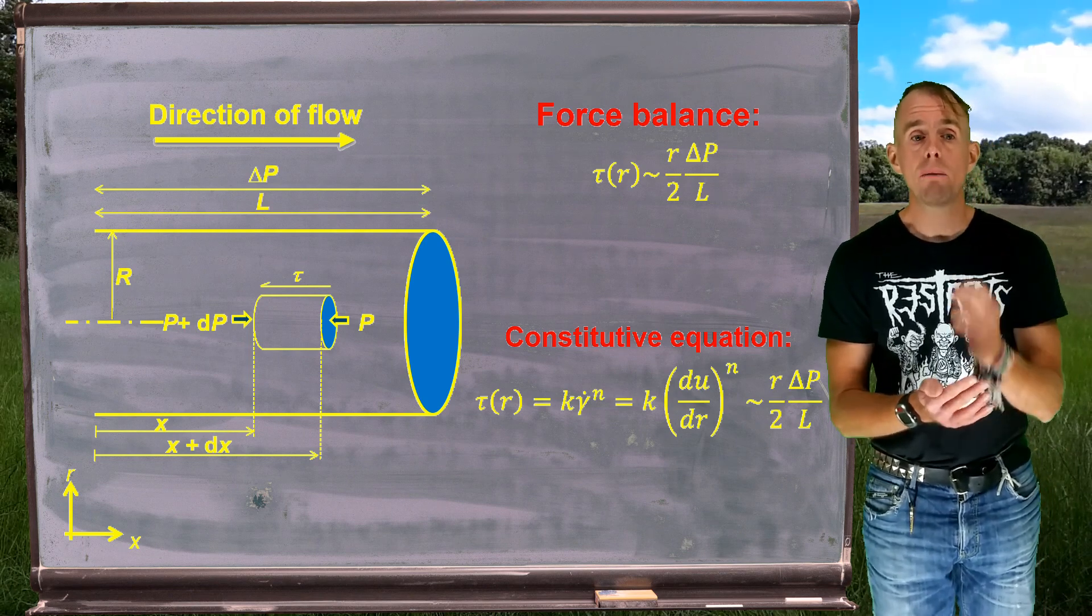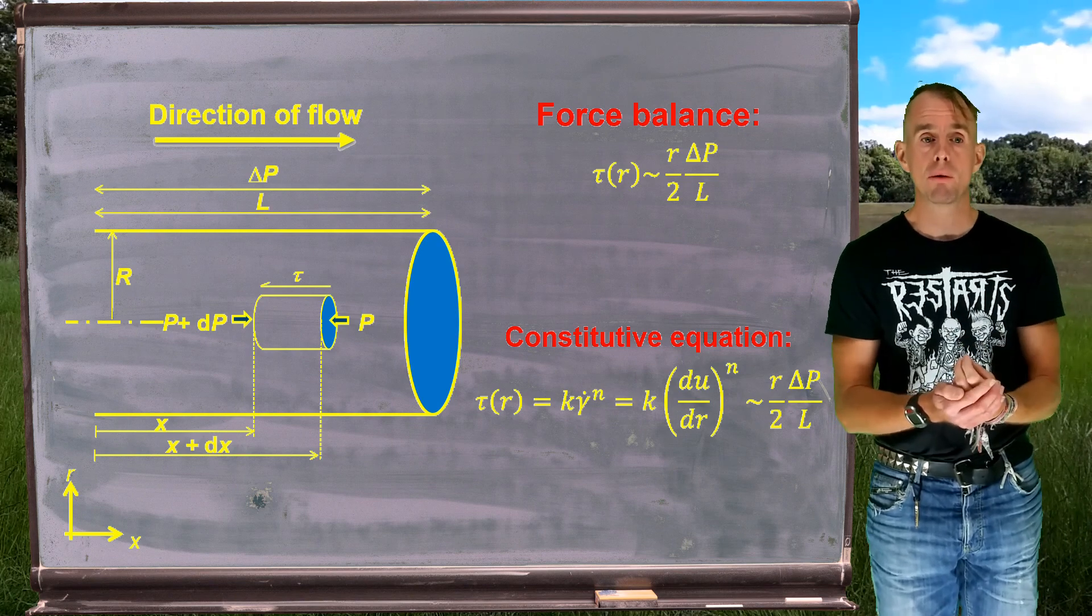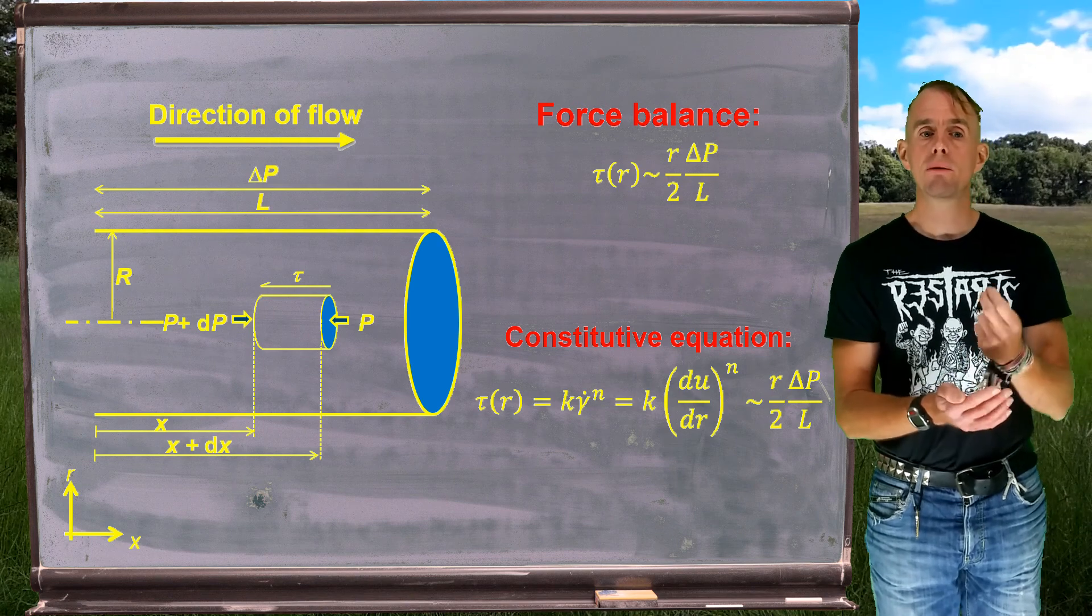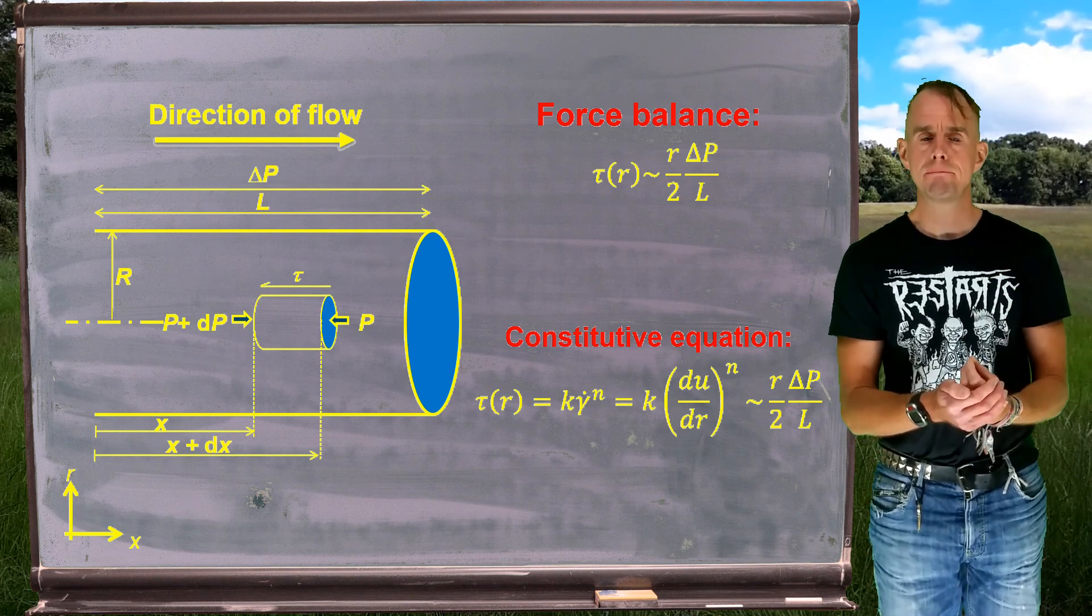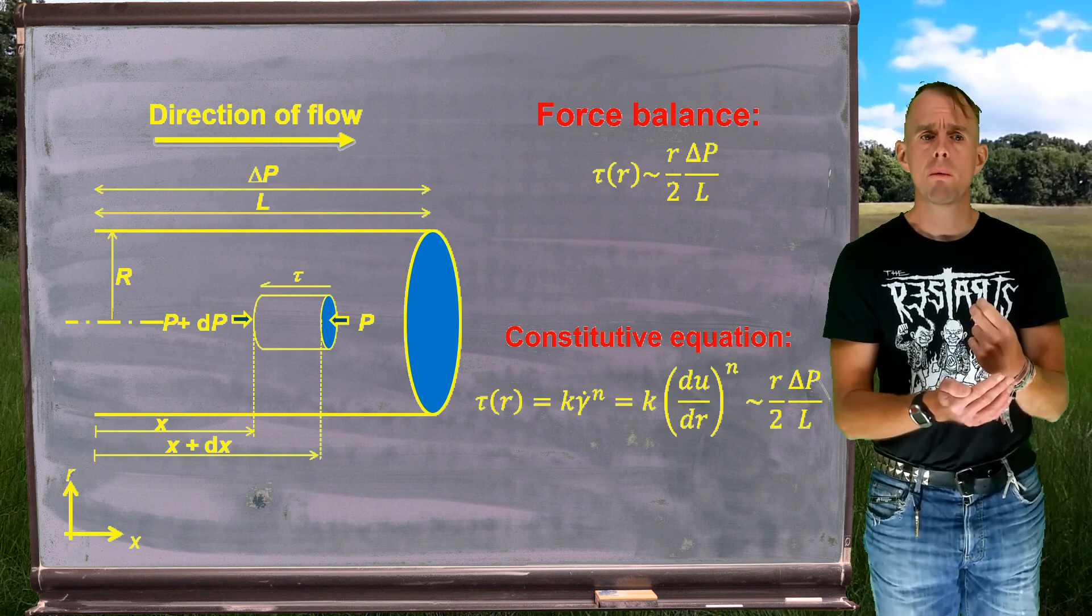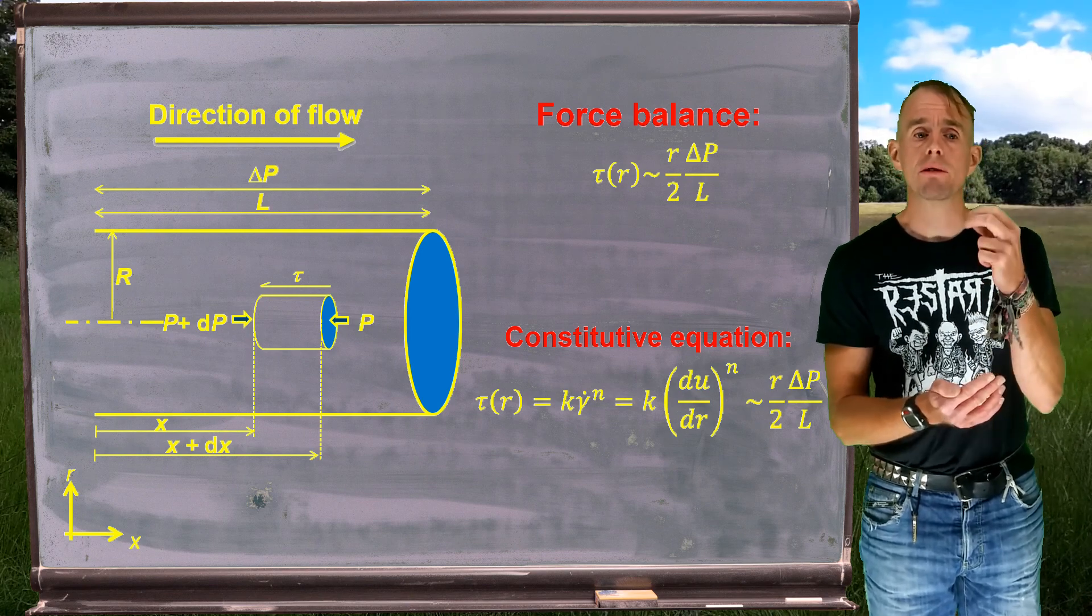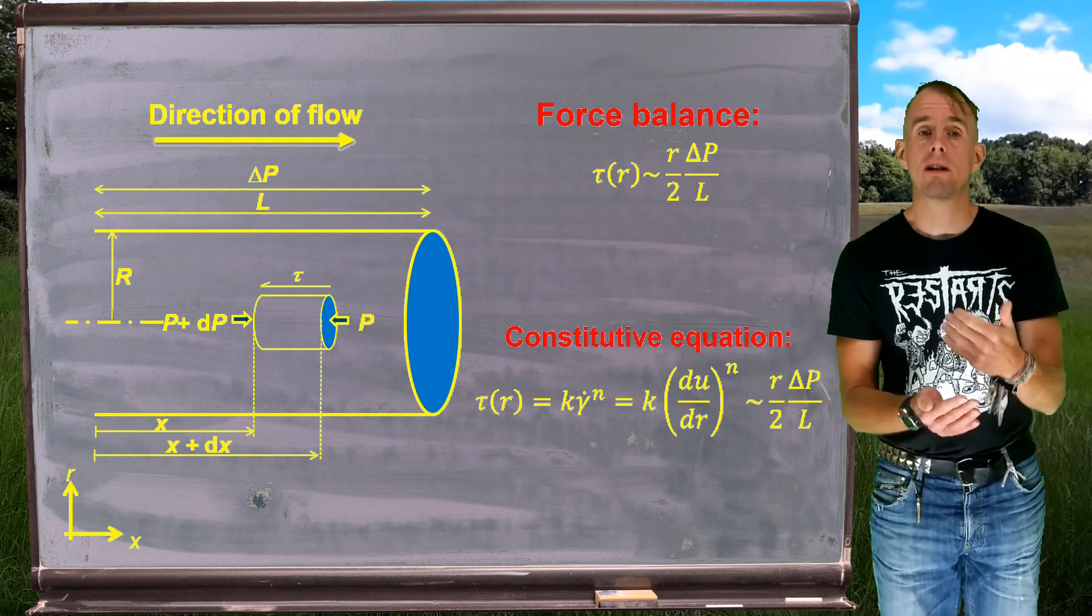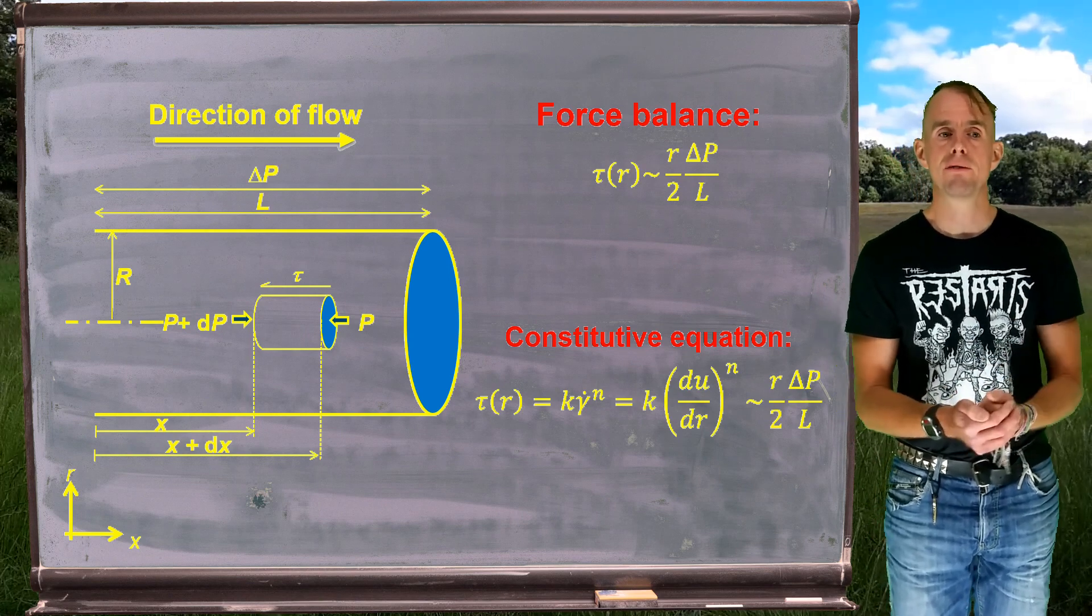Now, here we have the power law fluid, again, on the blackboard, which is written slightly differently, so we know tau of r equals k gamma dot to the n. Furthermore, we know that k gamma dot to the n is k du by dr to the power n, which is simply equal to r over 2 delta p over L.